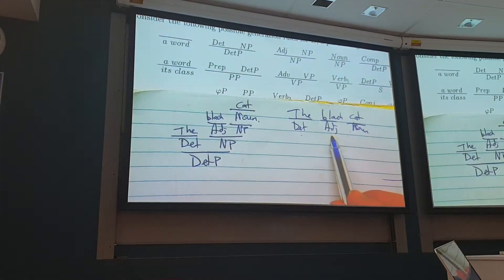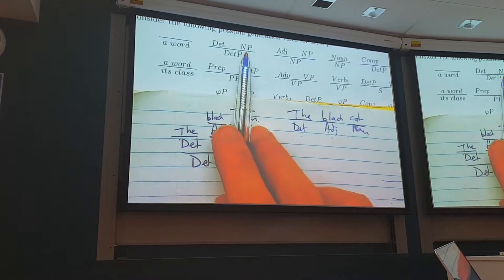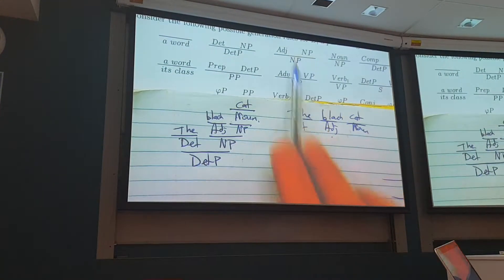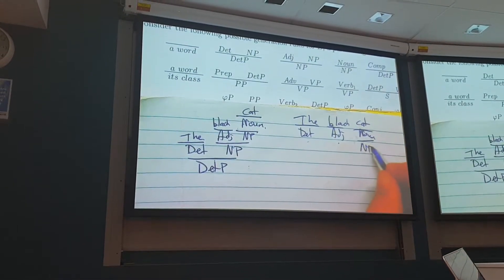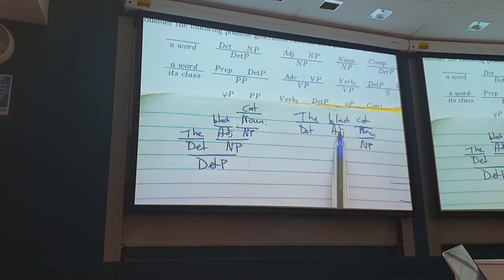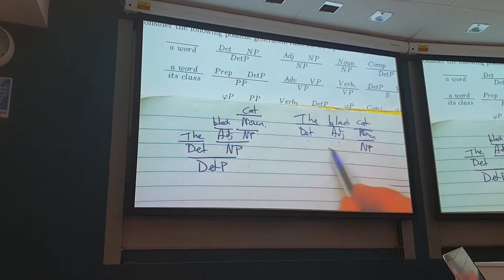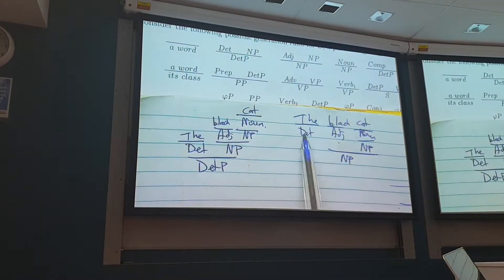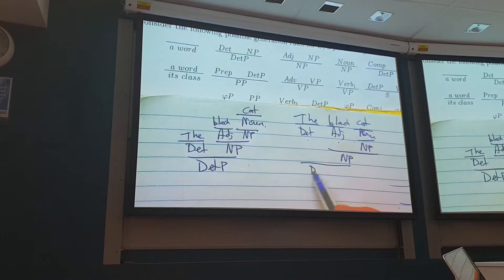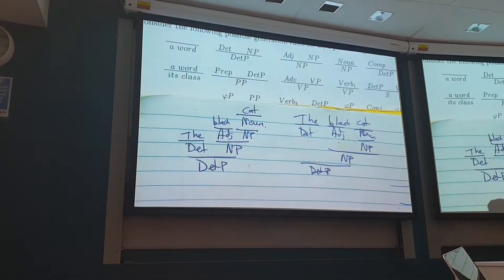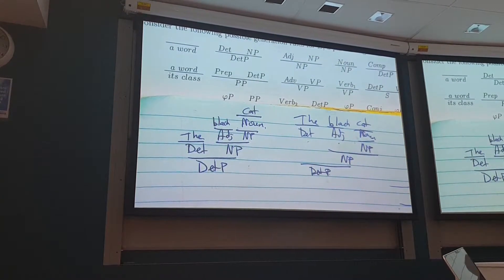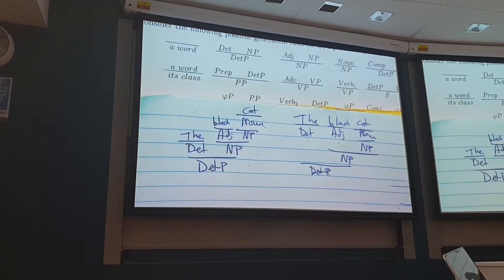Determiner can't join with adjective. Determiner can join with a noun phrase. Adjective can join with a noun. Put a noun into a noun phrase. The adjective and noun phrase join together to make a single noun phrase. The determiner and noun phrase can join together to give a determiner phrase. So that's how you would actually do it. You take your words and you break them down and see what grammatical structure, what format it is.